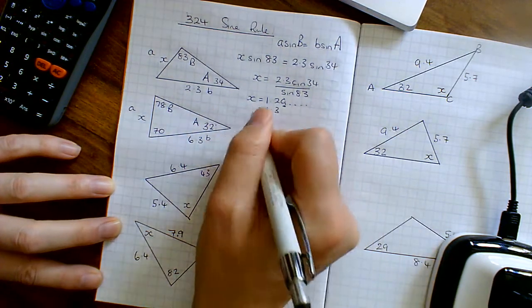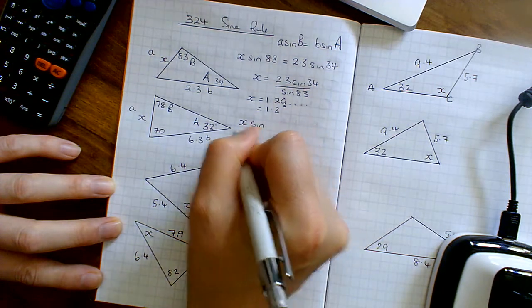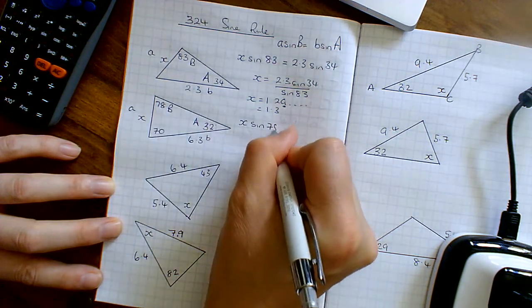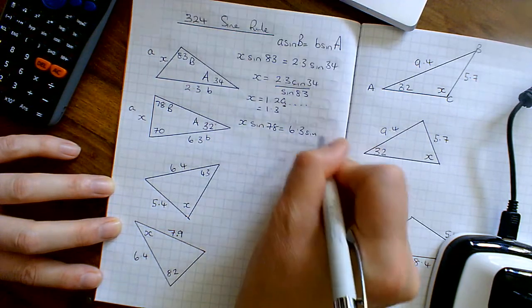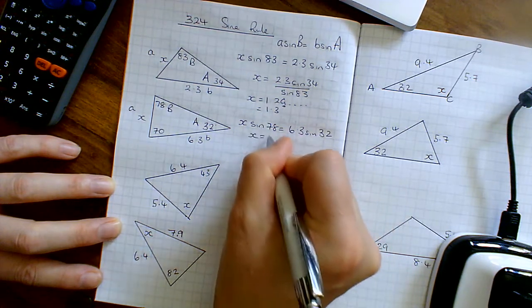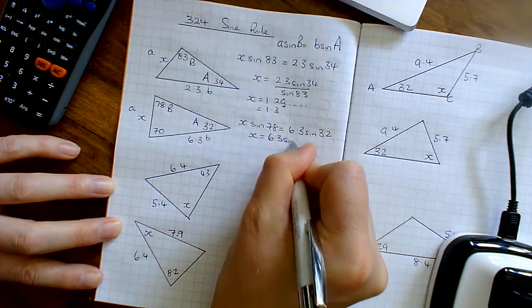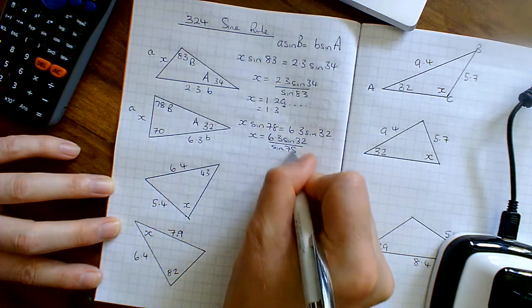So the 70's got nothing to do here. Plug in the formula: X sine of B which is 78 equals 6.3 sine of A which is 32. And then take the sine A, drop it on the bottom. X equals 6.3 sine of 32 divided by the sine of 78.